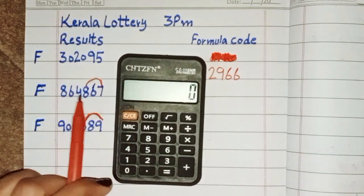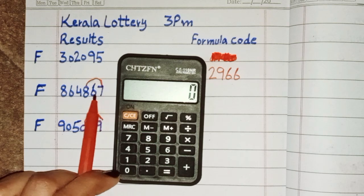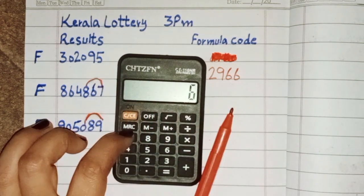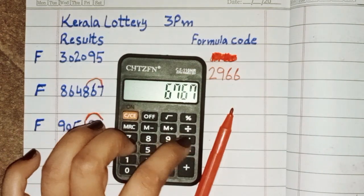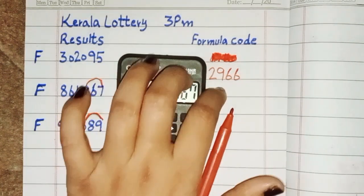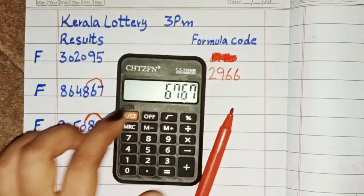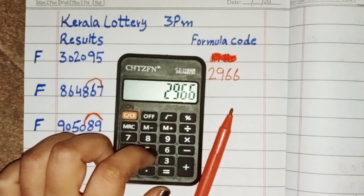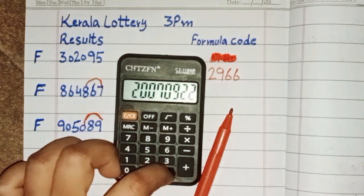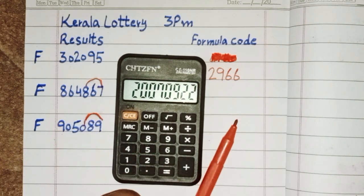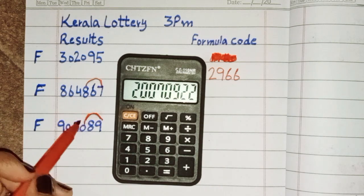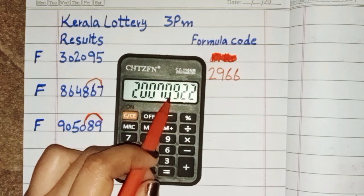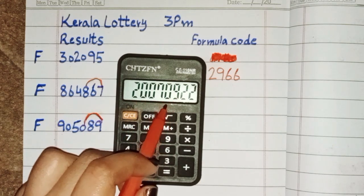Put this last two digit number on the calculator — 6767 — and multiply with this same formula code 29266, and just one time equal. After equal, you can check this same place number. AC formula — single AC formula — is passed by same place into next draw of Kerala lottery 3 p.m.